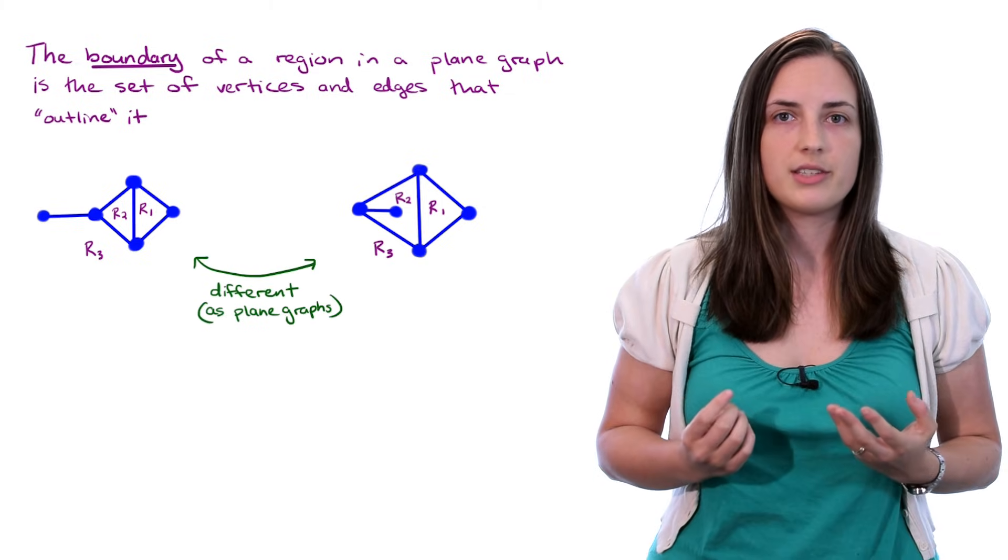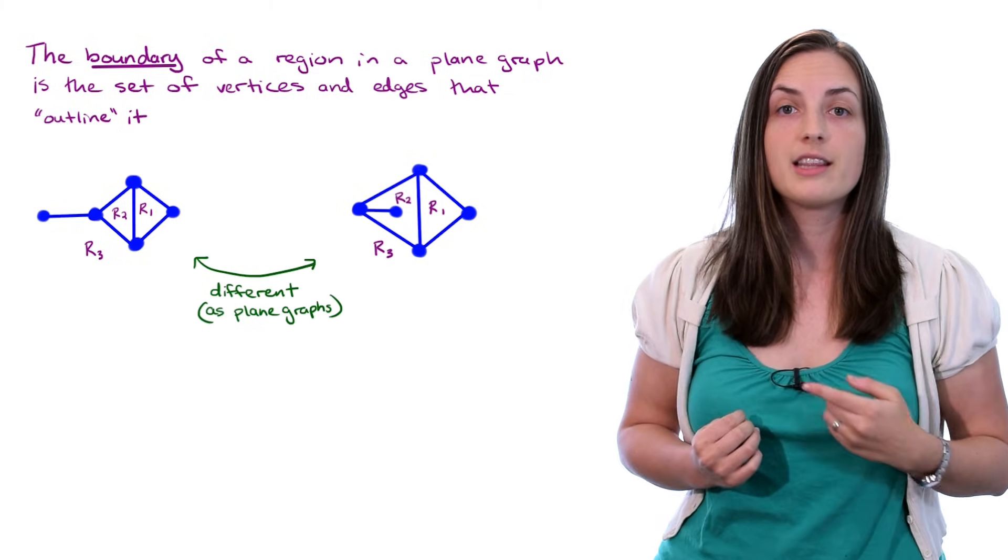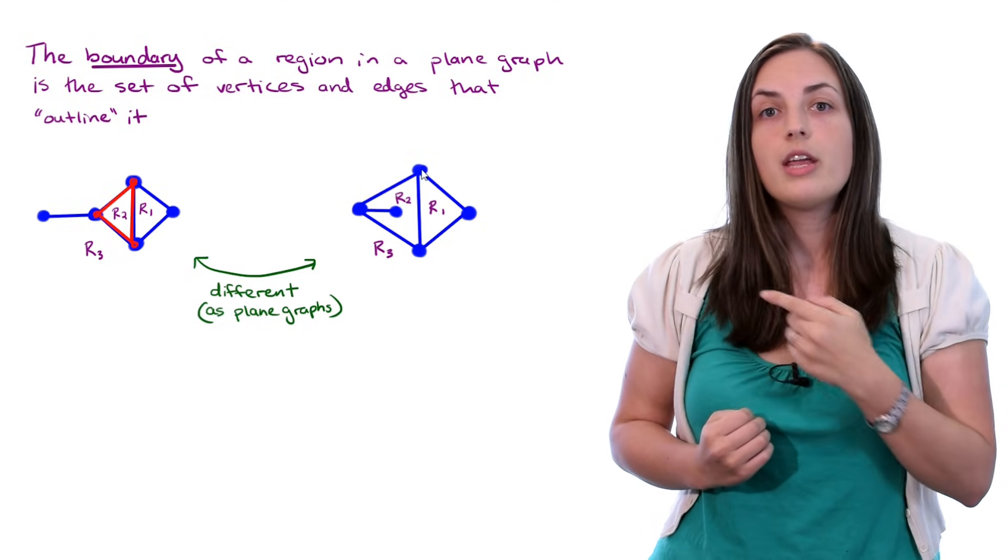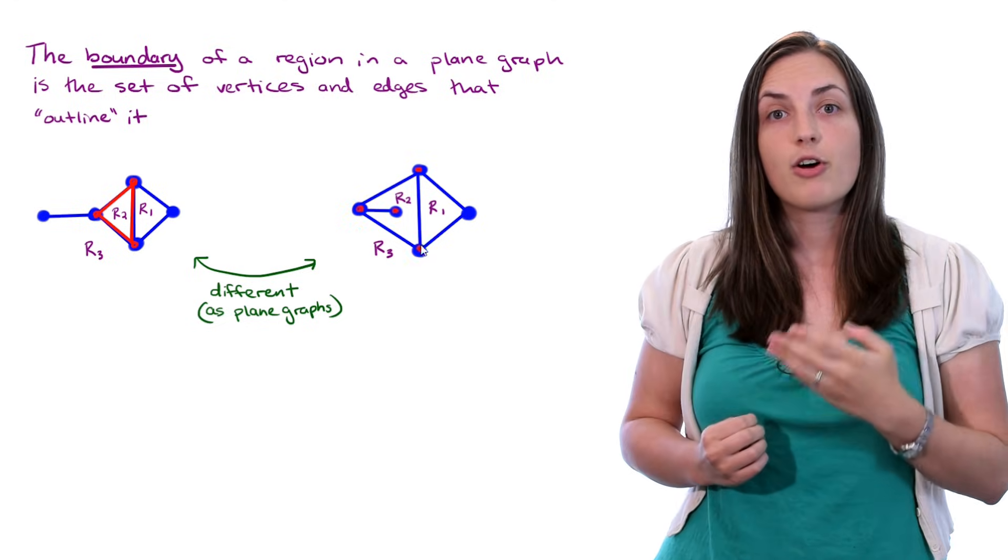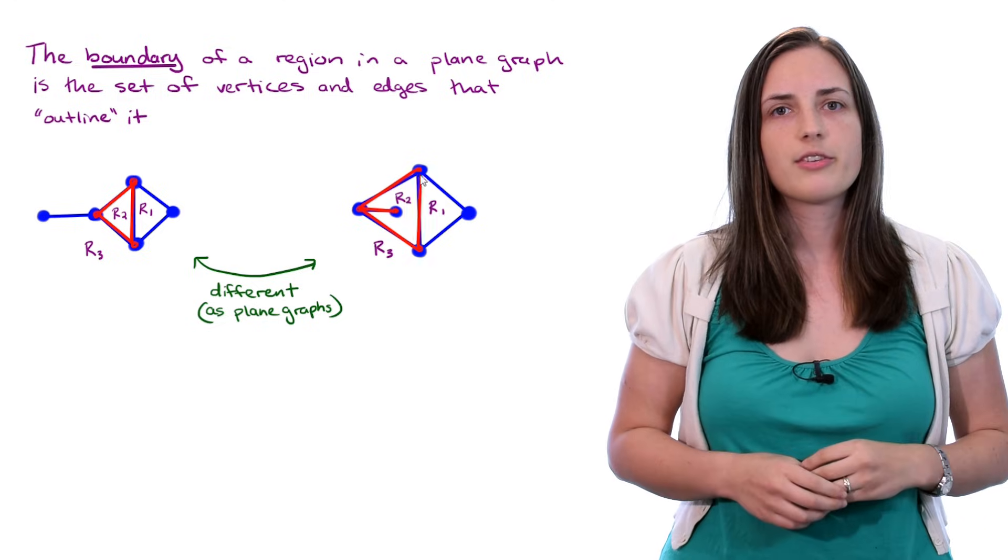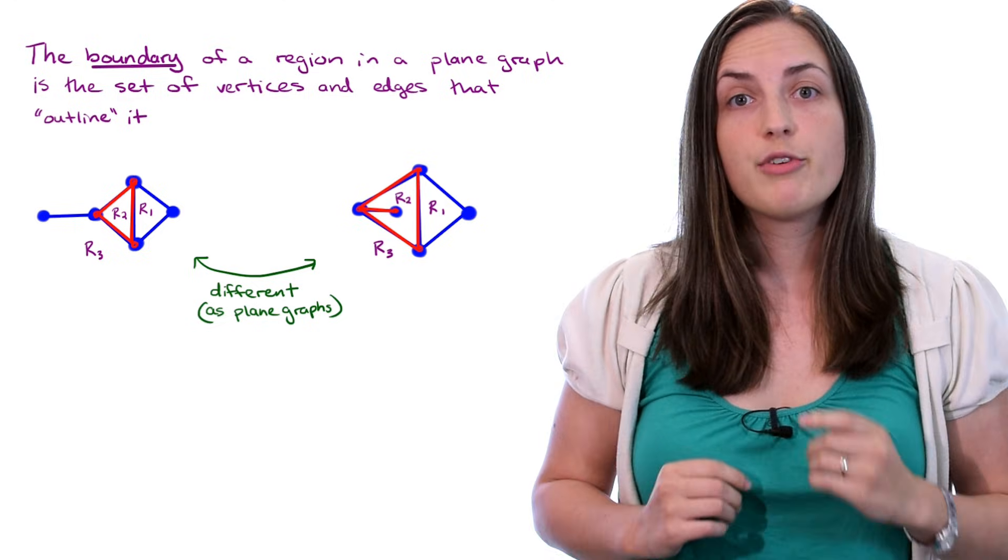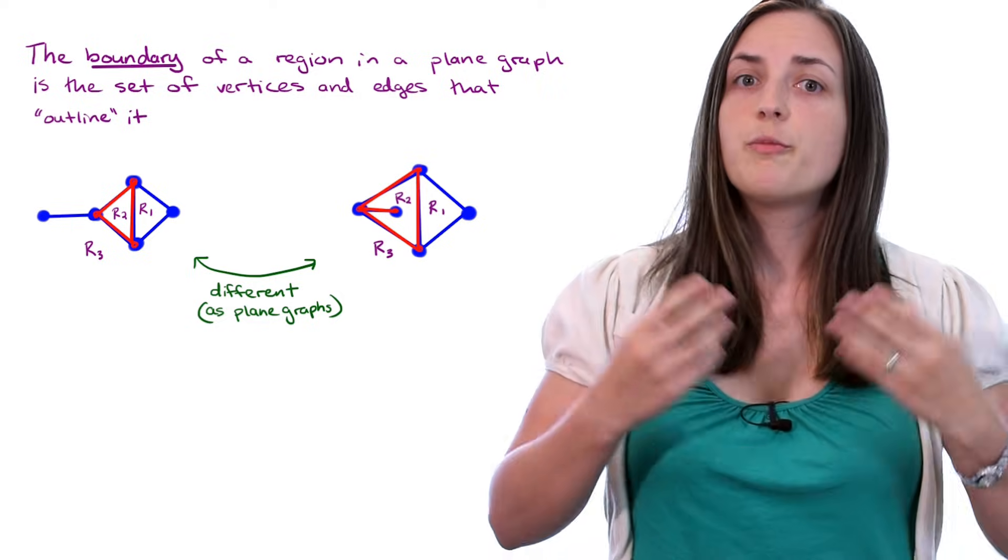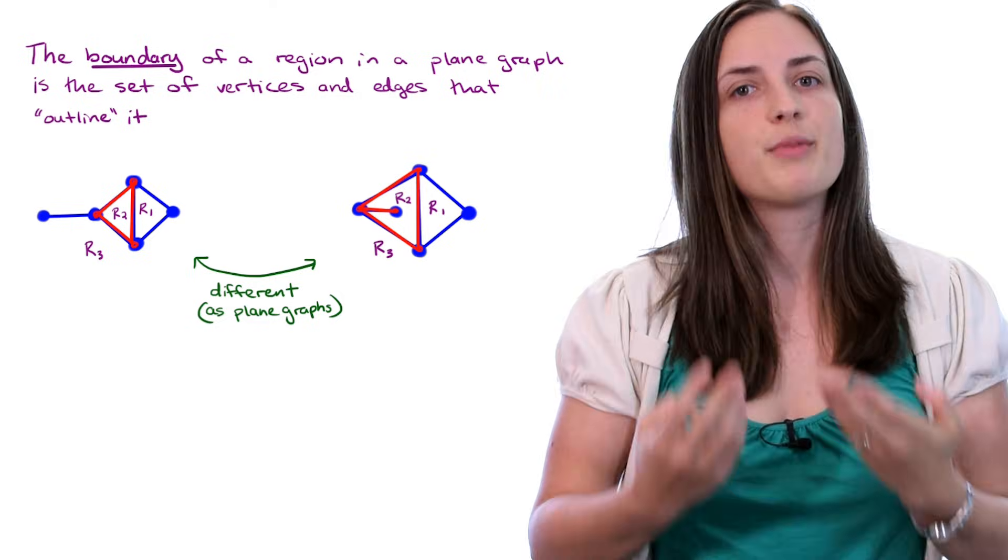They have different boundaries. For example, if you were to find the boundary of r2, it would contain only that triangle in the first picture, whereas the boundary of r2 in the other picture looks different. So keep in mind that even though these graphs are clearly the same in the sense that they are isomorphic, they could be drawn in different ways in terms of a plane drawing.